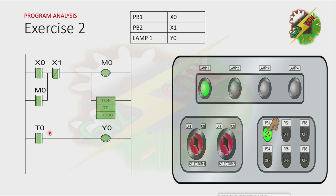All the contacts of T0 will change. Because of that, the normally open contact here will be closed, and that will cause Y0 here to energize. And because Y0 is our lamp, the lamp will turn on.